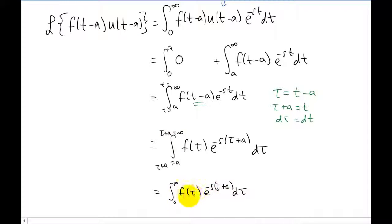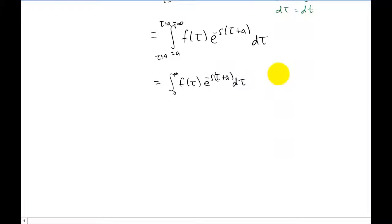Now this is starting to look a lot like a regular old Laplace transform. What we do have to do is one or two little steps of algebra. And now you'll notice that this term right here, this e to the negative SA, does not have a tau in it. It's a constant with respect to tau. So we can pull that out of the integral.